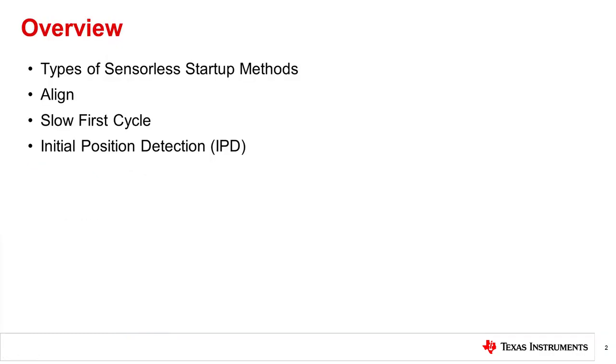Today I will be providing an overview and comparing the various methods of sensorless motor startup for three-phase brushless DC motors. In this video, we'll discuss the advantages and disadvantages of the three main sensorless BLDC motor startup methods: Align, slow first cycle, and initial position detection. By the end of this video, we'll understand the trade-offs and reasons for choosing between the different sensorless motor startup methods.